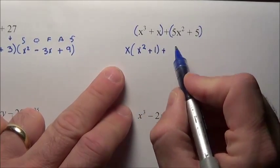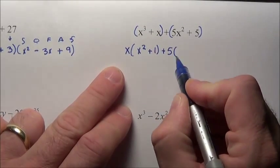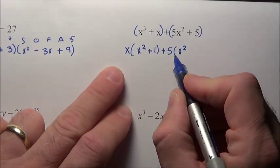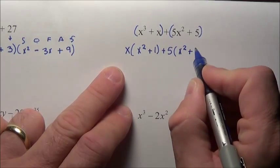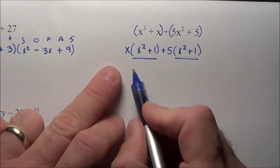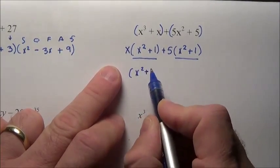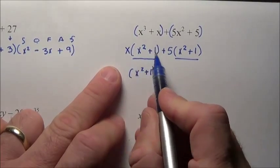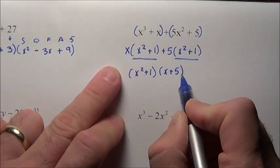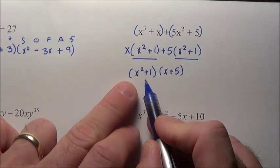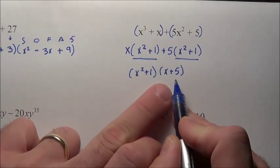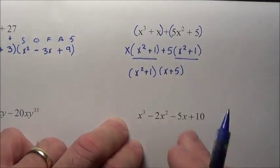Now what factors out of the second group? They both have a 5, and 5 is the most that can come out. 5 times what gives you 5x squared? x squared. 5 times what gives you plus 5? Plus 1. Notice this has x squared plus 1 and this has x squared plus 1. So we factor out x squared plus 1, and we're left with x squared plus 1 times x plus 5. These two pieces that are the same come out front and you're left behind with x plus 5.